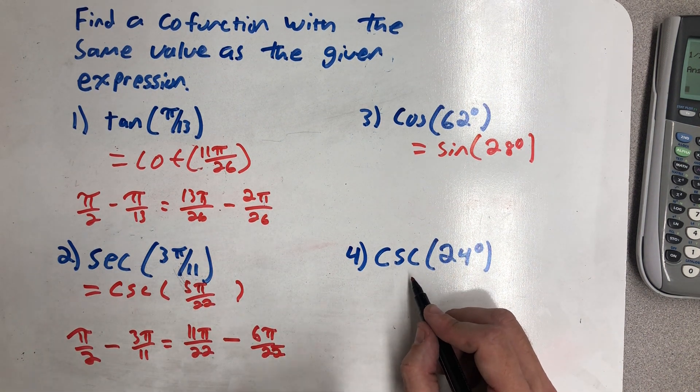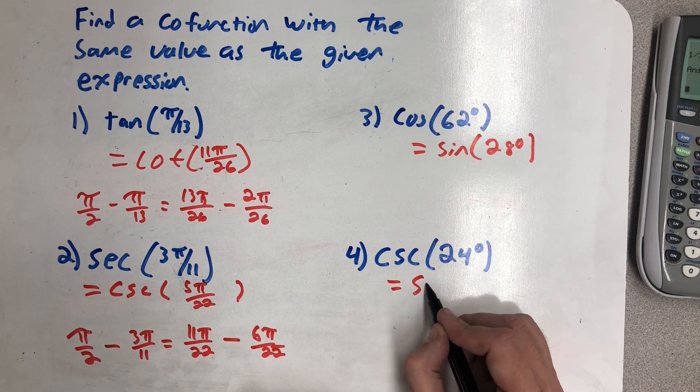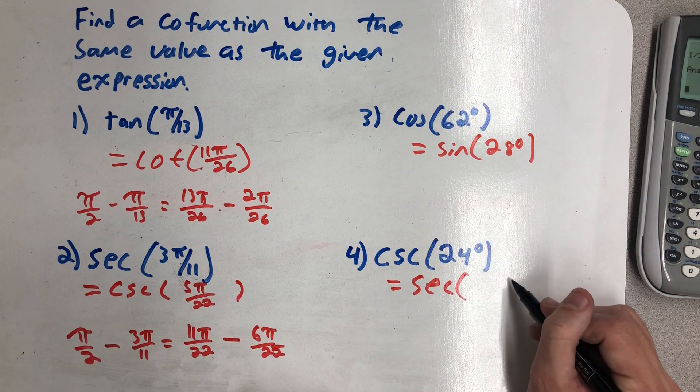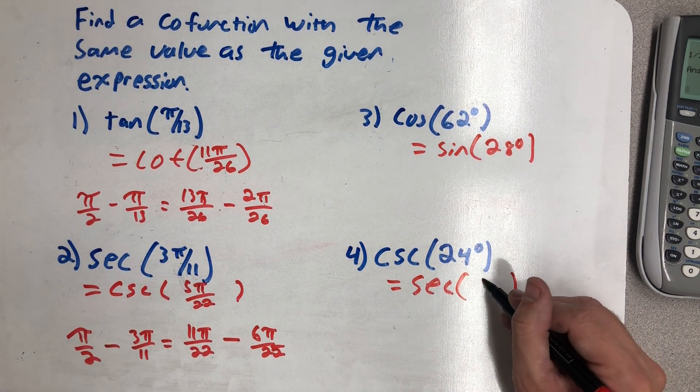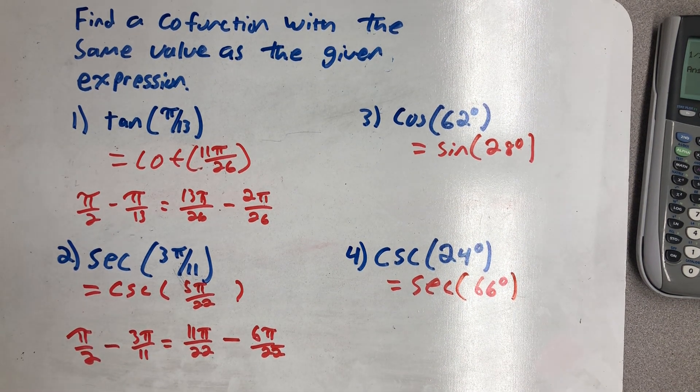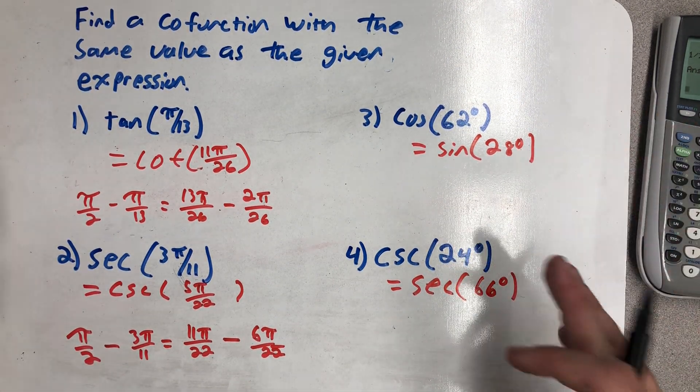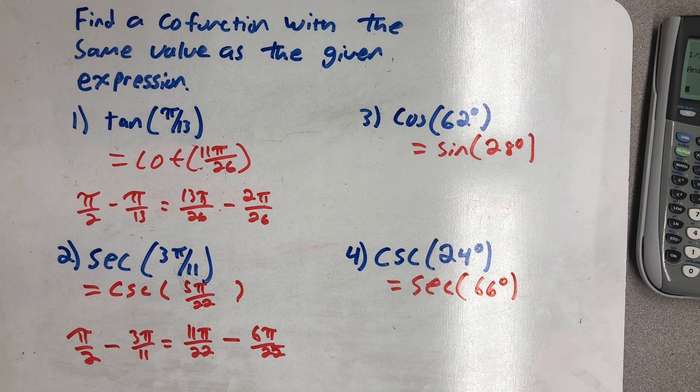The cofunction for cosecant would be secant. And the complementary angle for 24 degrees would be 66 degrees. And there we have four trig functions and a cofunction that they are equivalent to.